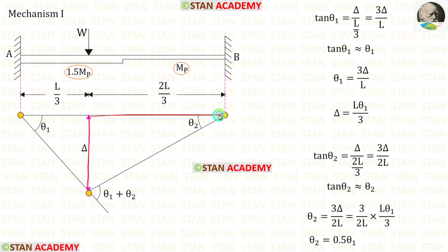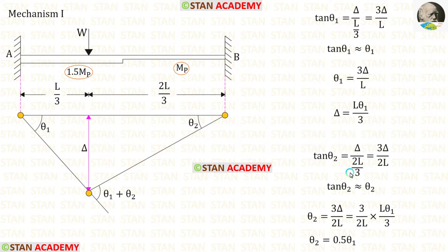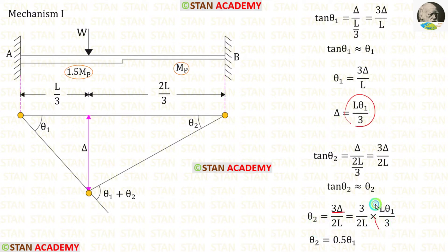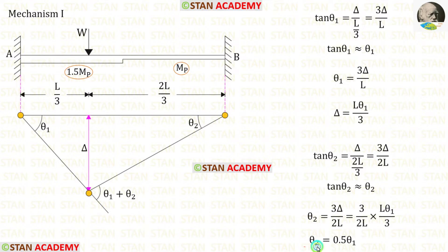Now let us take the other triangle. In this triangle, tan theta2 is equal to delta upon 2L upon 3. Taking 2L upon 3 inversely and multiplying with delta, we get 3 delta upon 2L. Since tan theta2 is approximately equal to theta2, we get theta2 equal to 3 delta upon 2L. Substituting delta equal to L theta1 upon 3 and simplifying, finally theta2 is equal to 0.5 theta1.